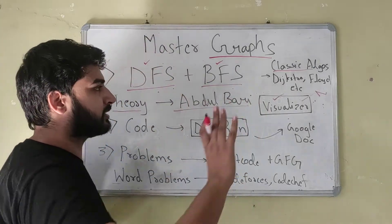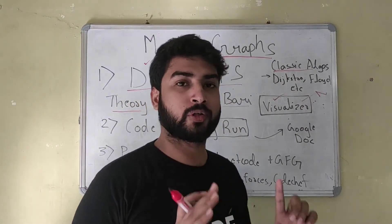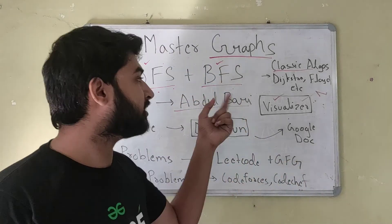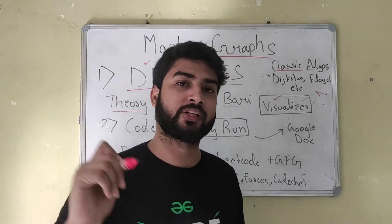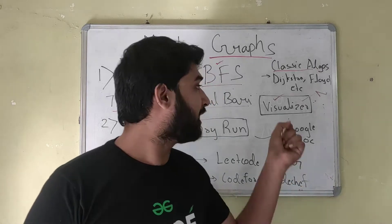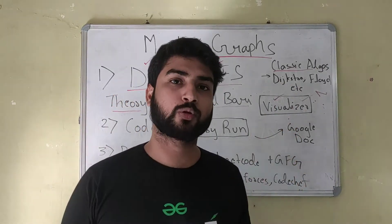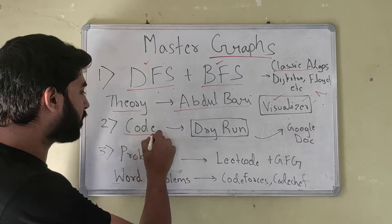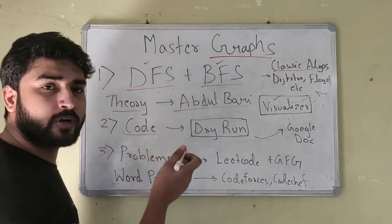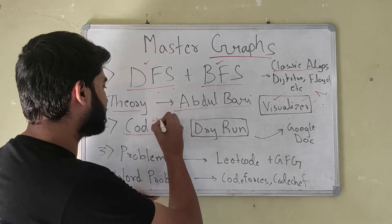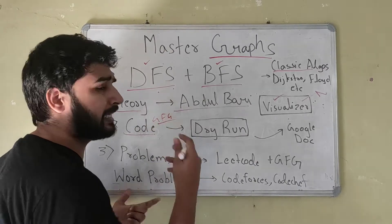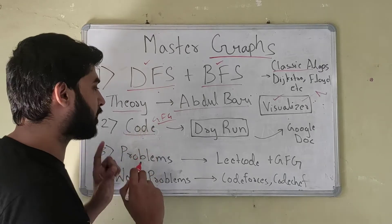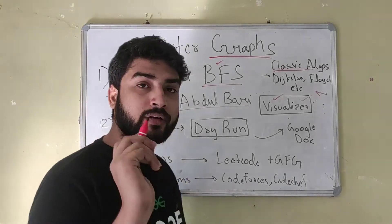Once the theory is done — and it's very important that you're clear with the concepts — the next part is learning the implementation of DFS, BFS, and the other algorithms. For getting the code, you can use Geeks4Geeks, which has code for almost every data structure and algorithm. After you get the code, here's what I want you to do.